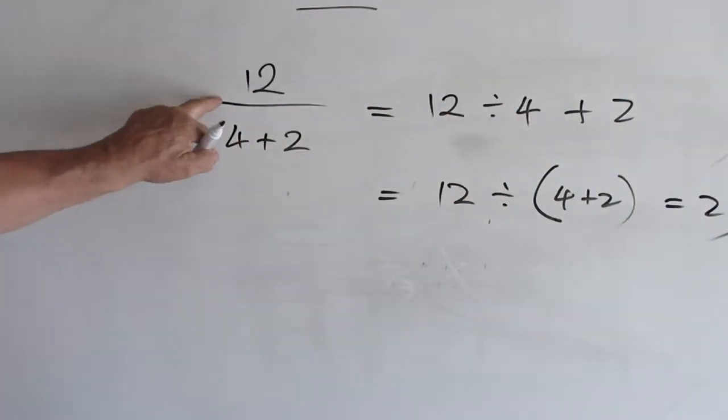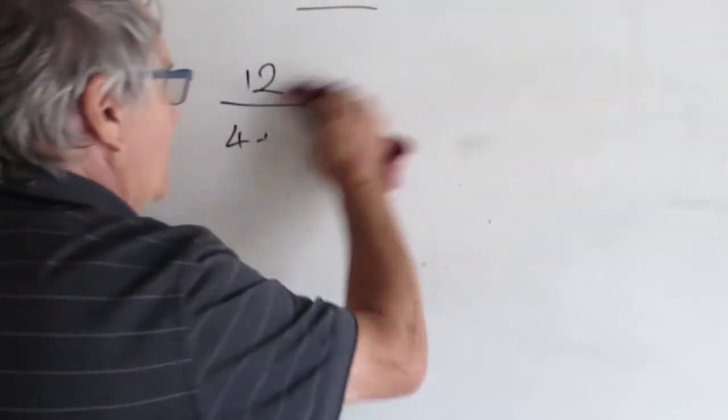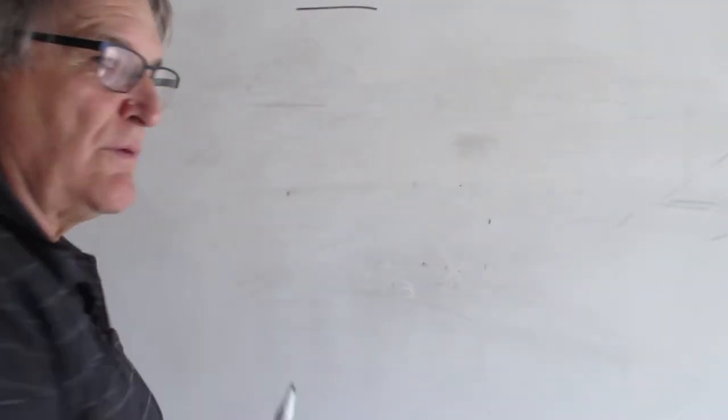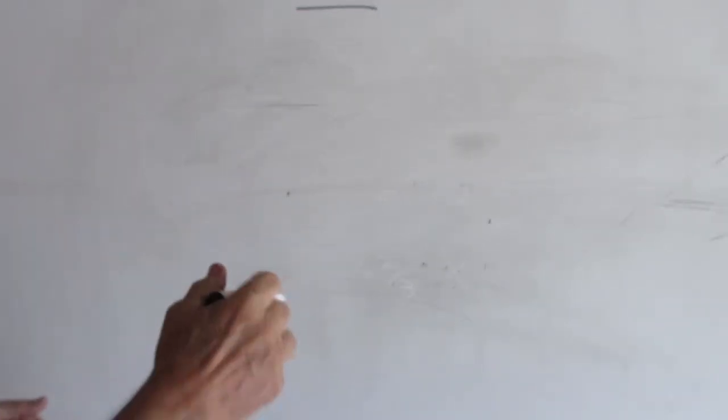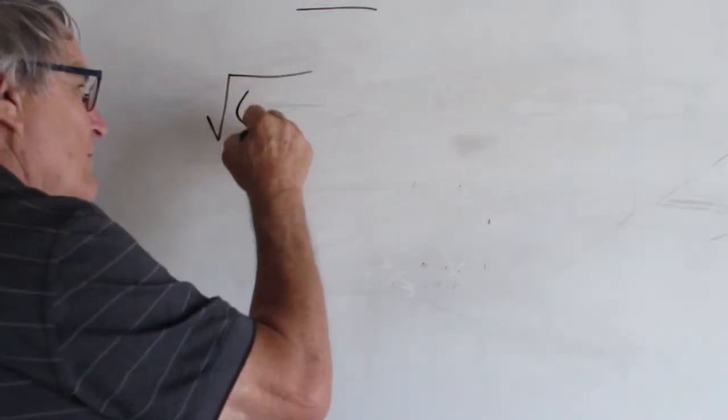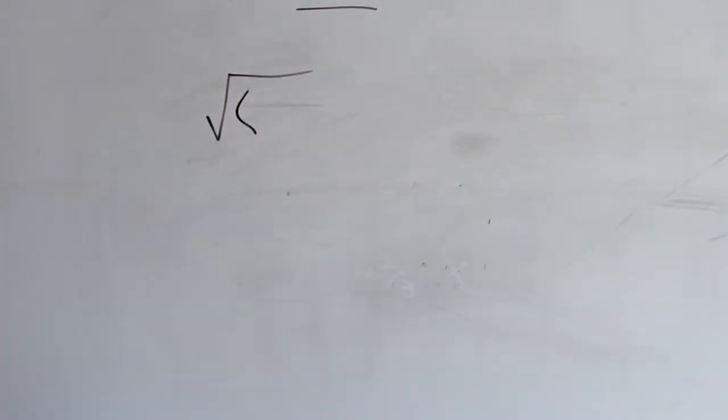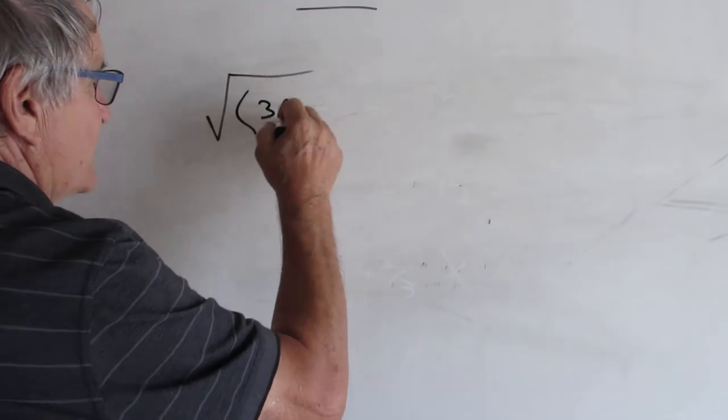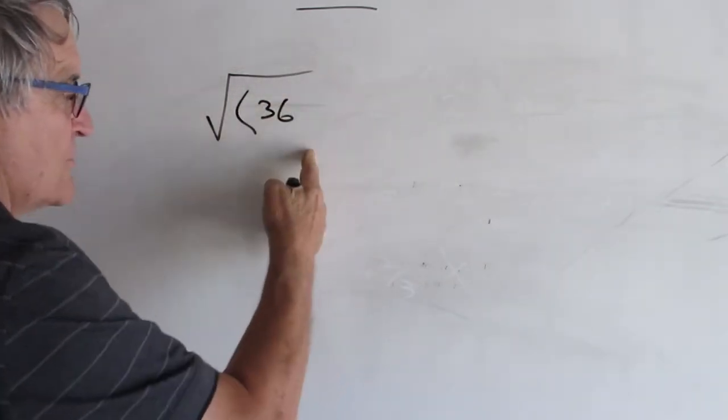So look out for this. Another one that's similar, with a hidden bracket, is the square root. Now if you go to a good quality calculator, and you want the square root of 36, you press the square root button, straight away it's going to give you a bracket. Now if you want the square root of 36, you don't even have to close off the bracket.